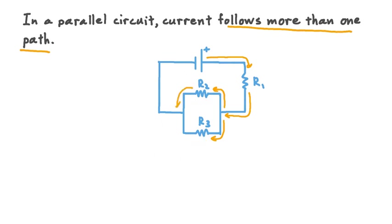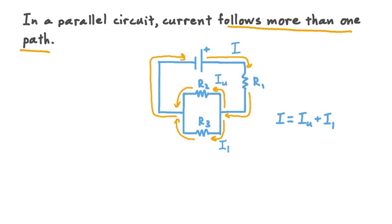So we have current traveling through the upper branch and some current traveling through the lower branch. When these branches join back up so that there's only one path for current to flow, the current rejoins and continues around the circuit. Let's apply a few labels: the total current in our circuit is I, the current through the upper branch is I sub U, and the current through the lower branch is I sub L. We can say that the total current I is equal to the sum of the currents across the upper and lower branches.